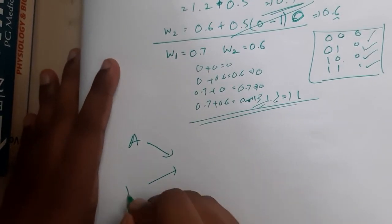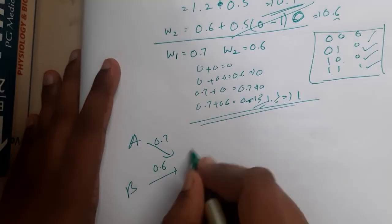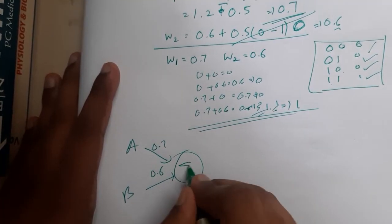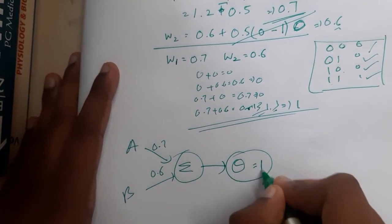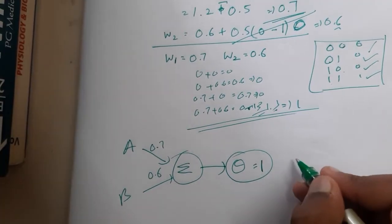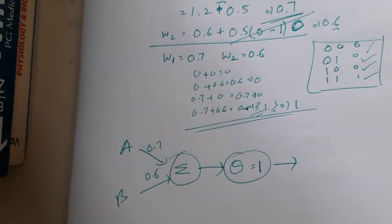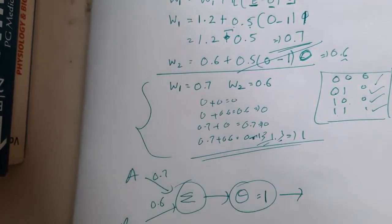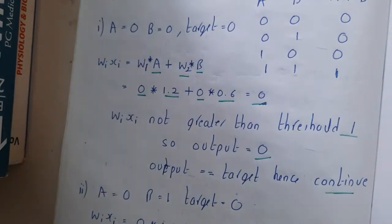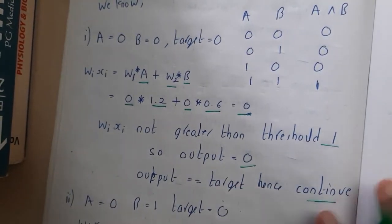We have successfully constructed the perceptron. The final perceptron diagram: inputs A and B, w1=0.7 on A, w2=0.6 on B, fed into the perceptron node where they are summed and passed through the activation function with threshold 1, producing the output A AND B.